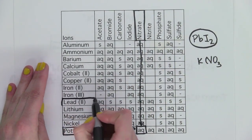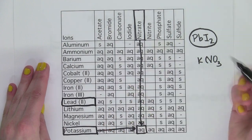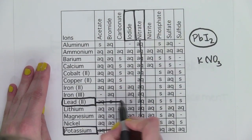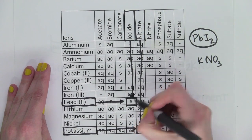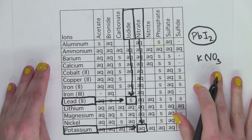Lead mixed with iodide. Voila. It's a solid. So to recap, solubility tables help chemists predict whether or not a precipitate will form when two solutions are mixed.